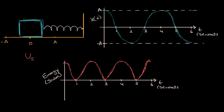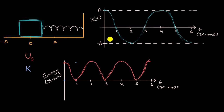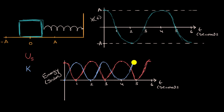Now what about kinetic energy? At time equals zero, when the box is at position A, there is no kinetic energy yet. But the box accelerates as potential energy converts to kinetic energy. We reach maximum kinetic energy when the box crosses position zero at time equals one second. At time equals two seconds, the box is at position negative A, momentarily has no velocity, and kinetic energy is zero again. We keep switching between potential and kinetic energy as the box oscillates between position A and negative A.